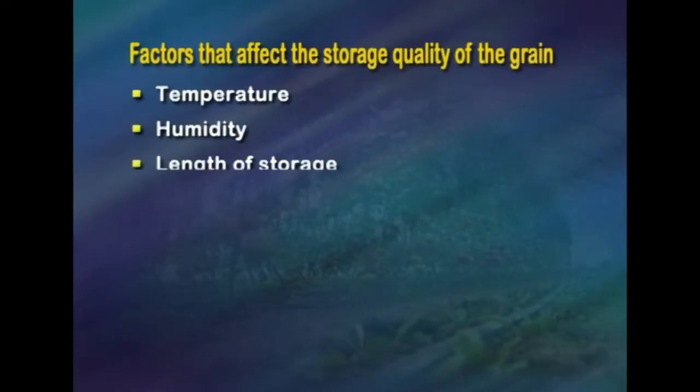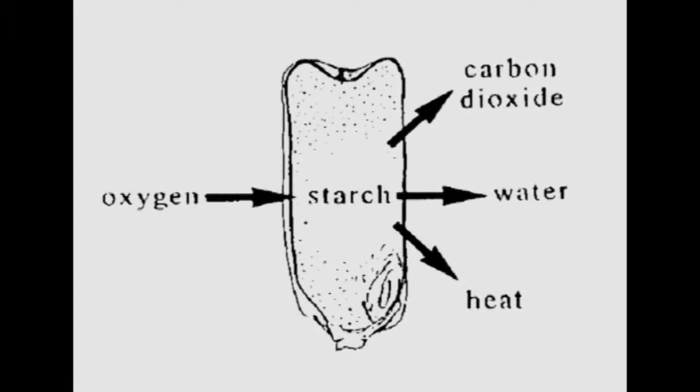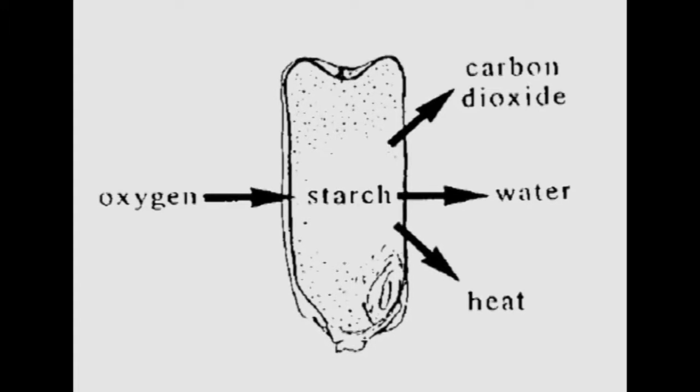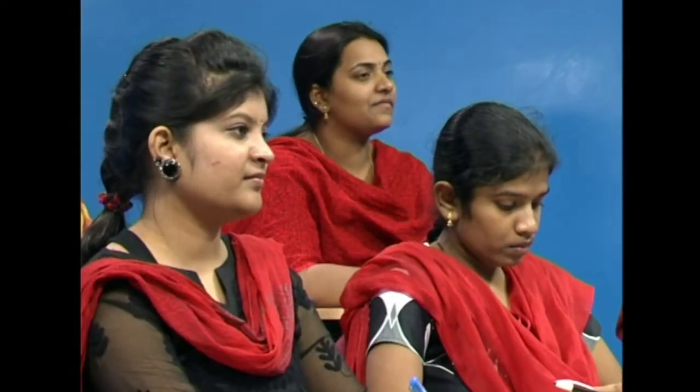The factors that affect the storage quality of grain include temperature, humidity, length of storage, insects and pests, and respiration. In grain legumes, grains respire, taking in oxygen from the air and converting the nutrients stored in their cotyledons into heat, carbon dioxide, and water in the form of moisture. These compounds are discharged into the atmosphere through the process of respiration, as illustrated by the general equation: carbohydrates are converted to oxygen, carbon dioxide, water, and heat. The process also induces the growth of moulds and insect pests, which further cause reduction and deterioration in grain quantity and quality.